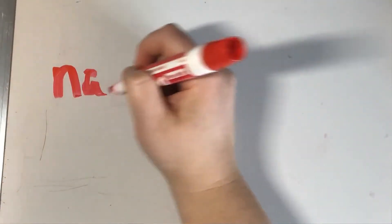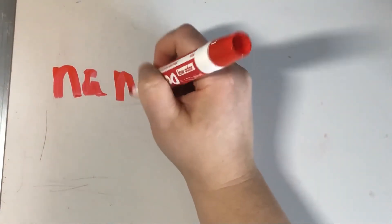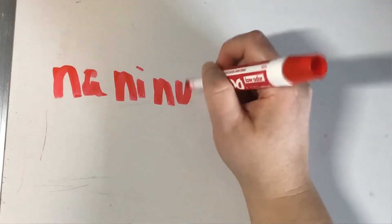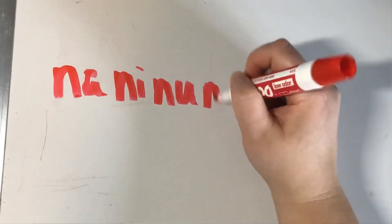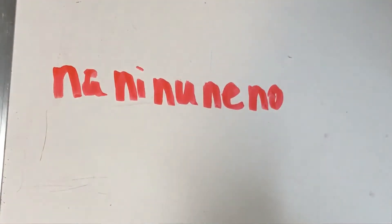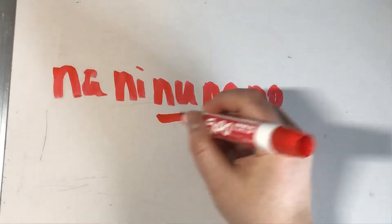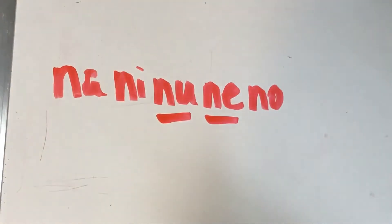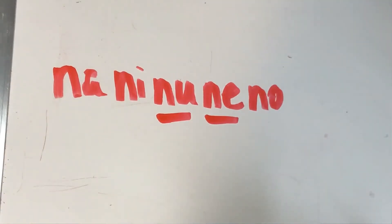The next ones are the N-row: na, ni, nu, ne, and no. A heads-up — nu and ne are going to look very similar, so we'll practice those a bit more and show a side-by-side comparison of the difference.